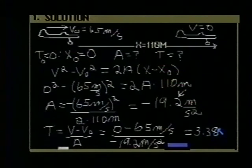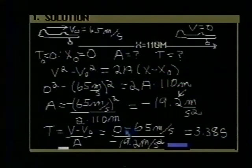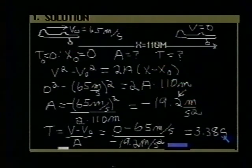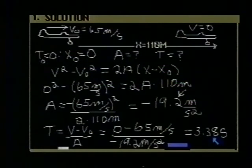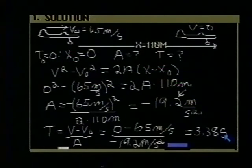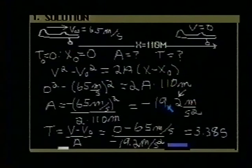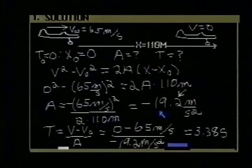Negative sign on top and bottom cancel out, so our answer is positive. We get 3.38 seconds for the time. If we check our answers, this time seems like a reasonable amount of time to stop on a carrier. If it was 3.38 hours, we may have a different idea. The acceleration minus 19.2 meters per second per second, how do you check an acceleration? Well, the acceleration of gravity is 9.8 meters per second per second. This is roughly twice the acceleration of gravity. Sounds like a reasonable value.